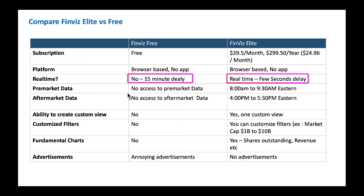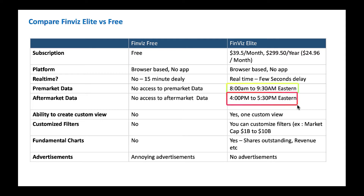One of the best features within Elite is you get to watch pre-market action from 8 a.m. to 9:30 a.m. Eastern. Also, you get to watch post-market data between 4 p.m. and 5:30 p.m. Eastern. Many folks like to watch their favorite stocks after the market or before the market opens to get ready for the next day or the same day.